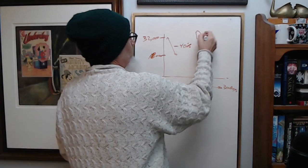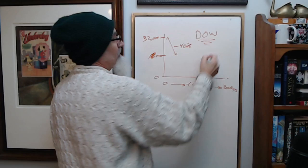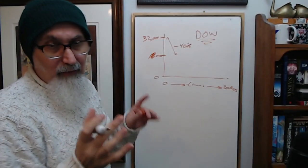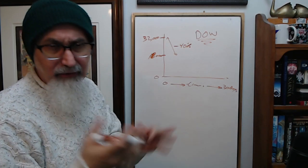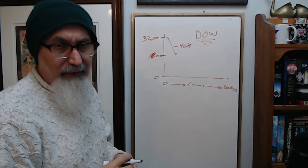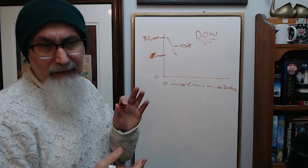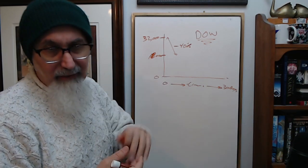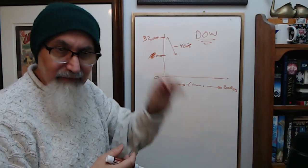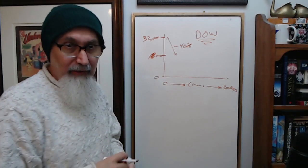This is the Dow. Dow is the top 30 stocks in Wall Street, in the United States, that are listed there. There's a whole bunch of them. You can look it up. There's Home Depot, Visa, Microsoft, Apple, all this stuff. A lot of FANG stocks.